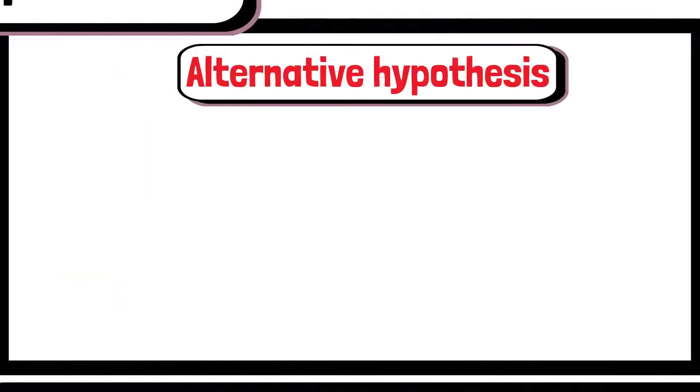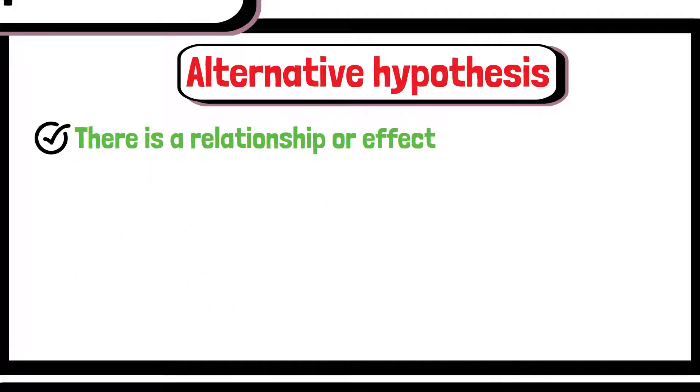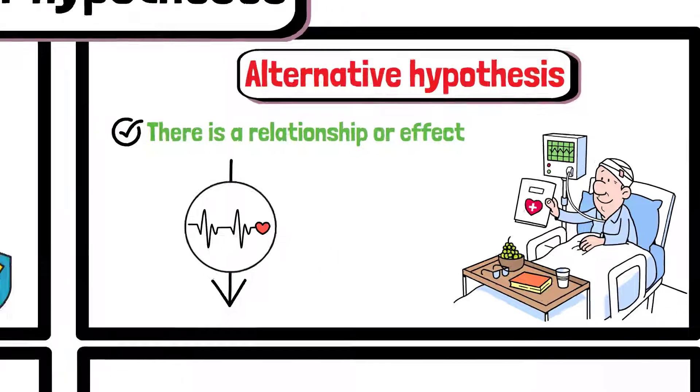Next, the alternative hypothesis suggests that there is a relationship or effect. Using the same example, the alternative hypothesis would predict that the medication does reduce symptoms.